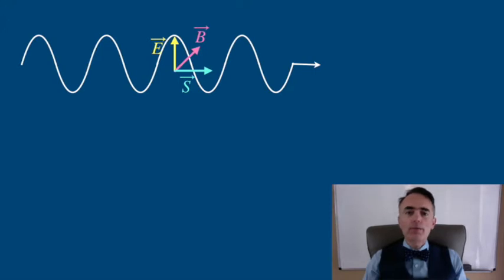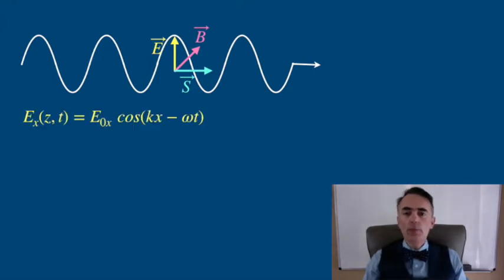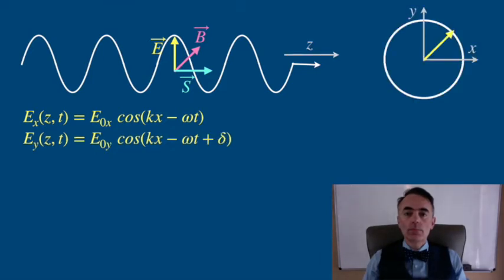The general way to write the direction of the E field is by... So the E field has two components in the plane perpendicular to the pointing vector.